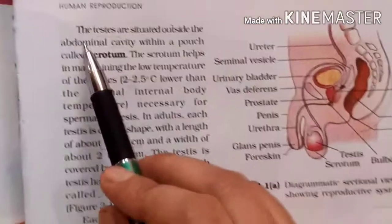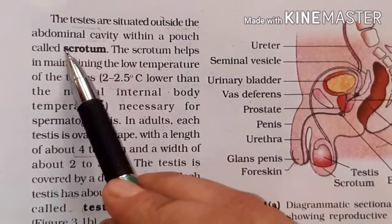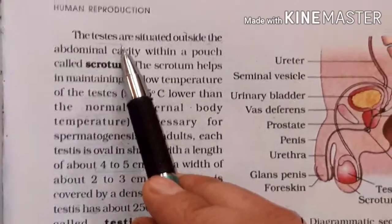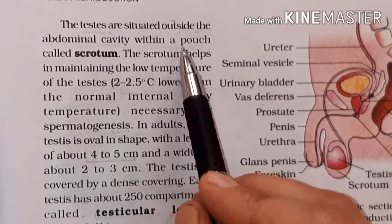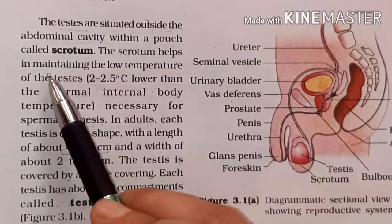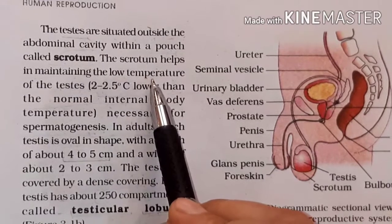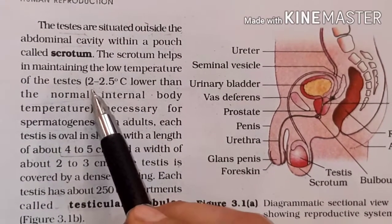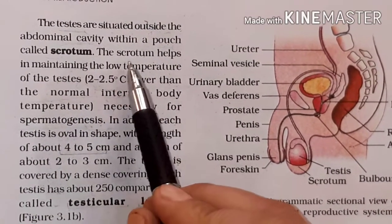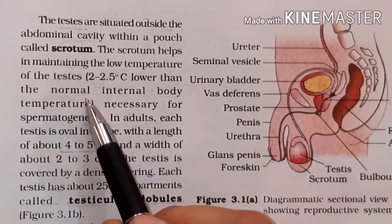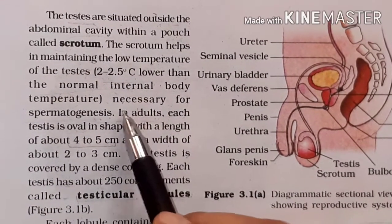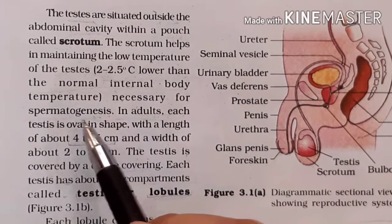The testes are situated outside the abdominal cavity within a pouch called the scrotum. The scrotum helps in maintaining the low temperature of the testes, that is 2 to 2.5 degrees centigrade lower than the normal internal body temperature, which is necessary for spermatogenesis.